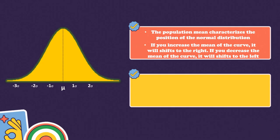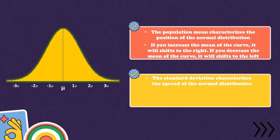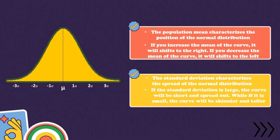Next is the population standard deviation. The standard deviation characterizes the spread of the normal distribution. While the population mean determines the position of the normal distribution, the standard deviation determines the spread or width of the normal distribution curve. If the standard deviation is large, the curve will be short and spread out. While if it is small, the curve will be skinnier and taller.